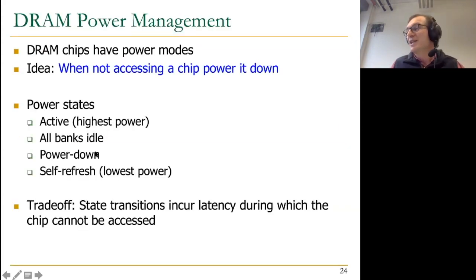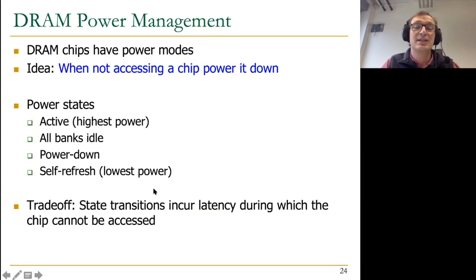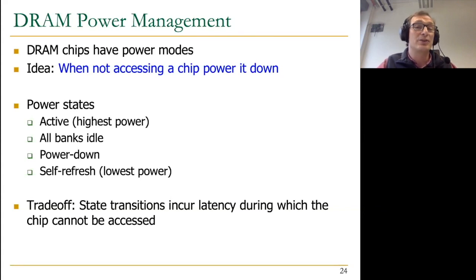Power management in DRAM needs to evolve — coarse-grained power states may need to become per-bank or even per-subarray. Dynamic voltage and frequency scaling of DRAM is also possible at fine granularity: reducing voltage saves power (power scales with the square of voltage) but may introduce errors because circuits operate more slowly. You can compensate by increasing the access latency to DRAM, trading off performance for power savings.